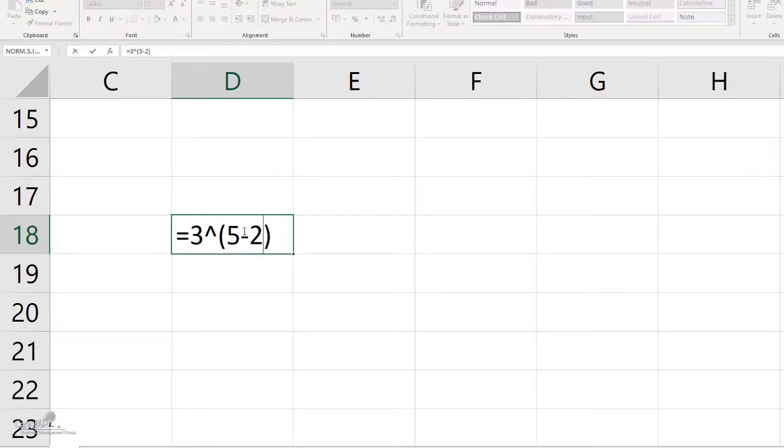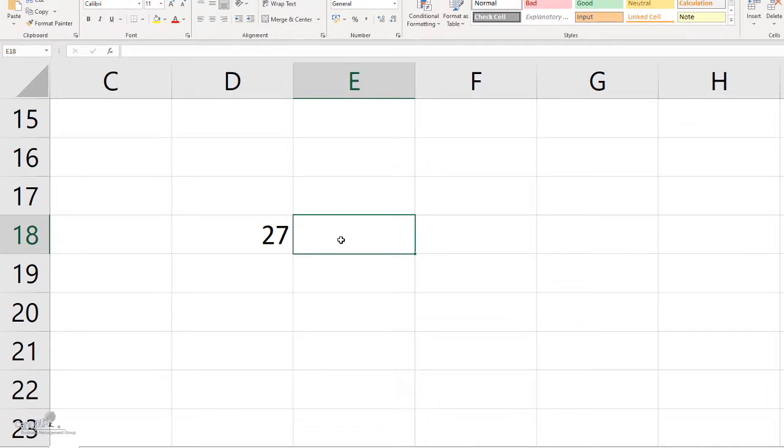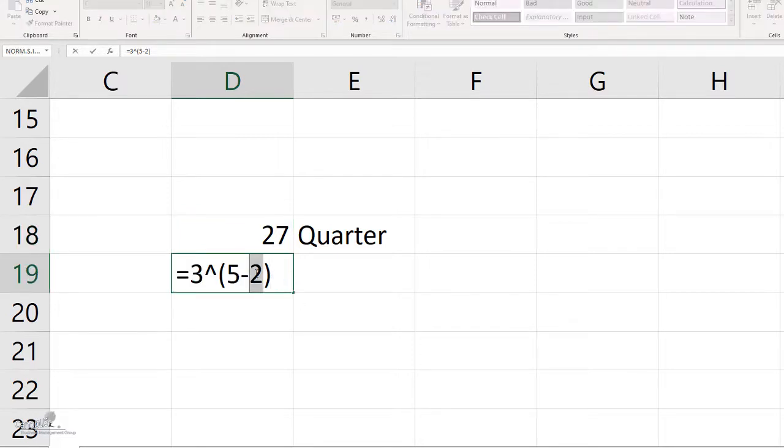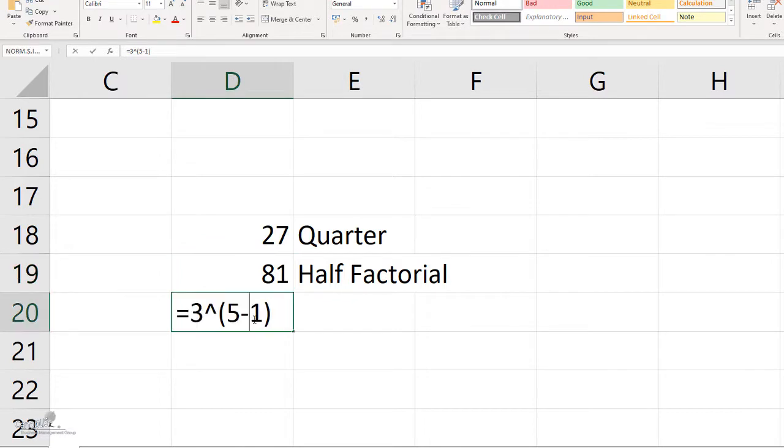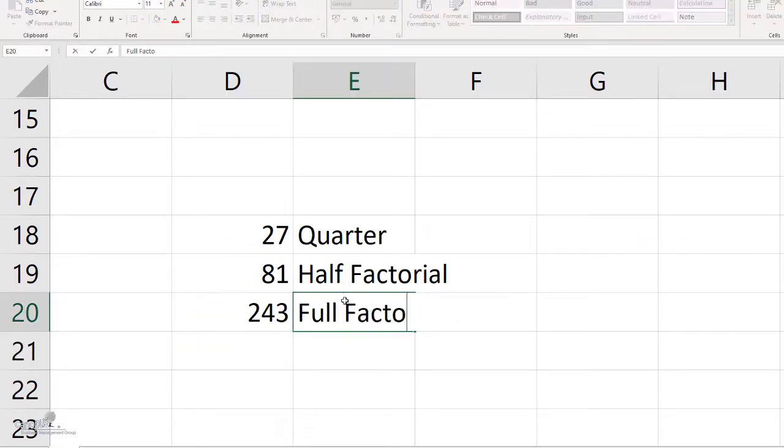When I use five minus two here, that means this is a quarter factorial experiment. If I had used one here, that is five minus one, that would be a half factorial experiment. And if I haven't used anything but left it at five, that would be a full factorial experiment.